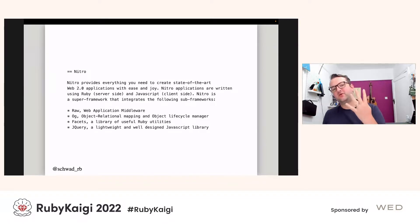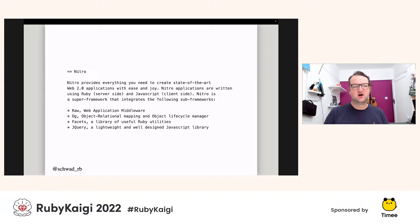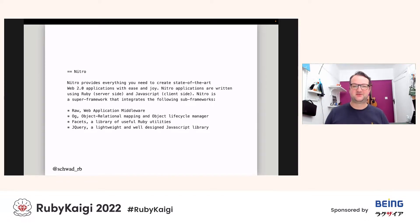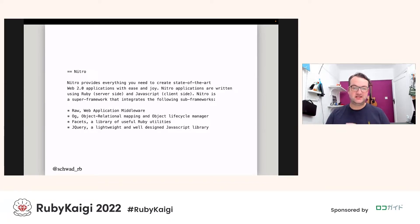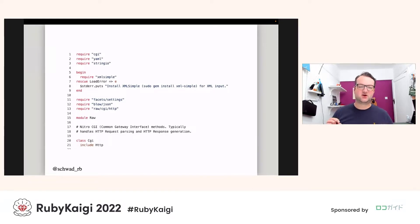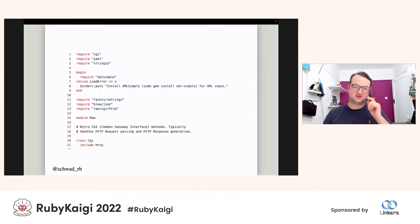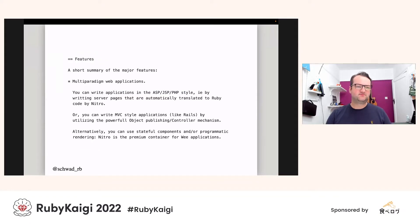Nitro had four core dependencies: Raw (the web application middleware — really the framework itself), OG (their ORM, written bespoke for Nitro), Facets (a very popular Ruby gem adding lots of goodness on top of the standard library), and jQuery — which we might joke about now but in 2004 was big stuff. One remarkable part of this application unique amongst the three frameworks today is that it predated Rack, so it has its own framework implementation sitting atop CGI. If you want to look at a full Ruby application built without Rack, this is the one to look at — the GitHub path is nitro-project.